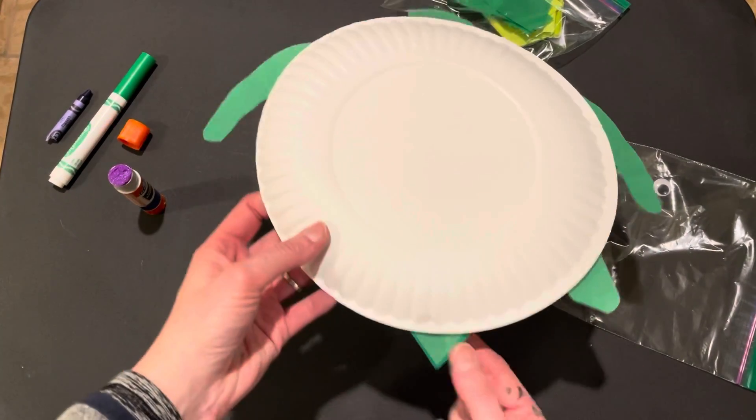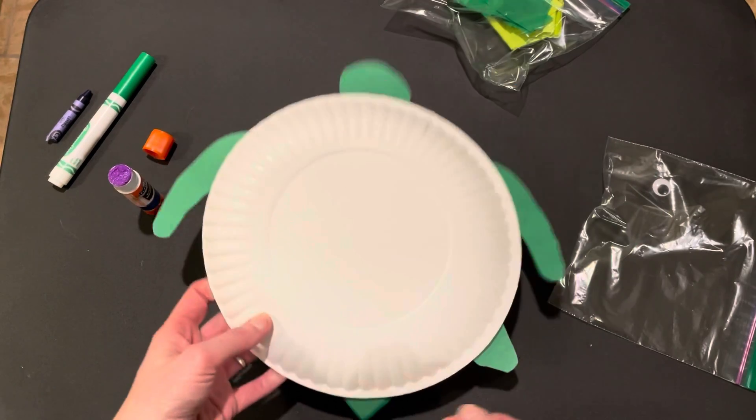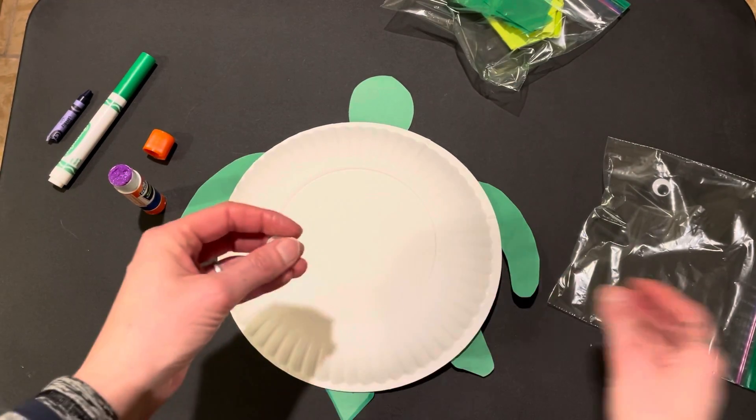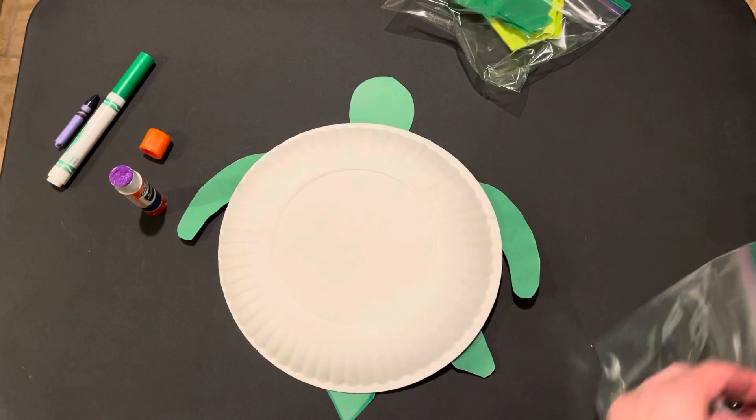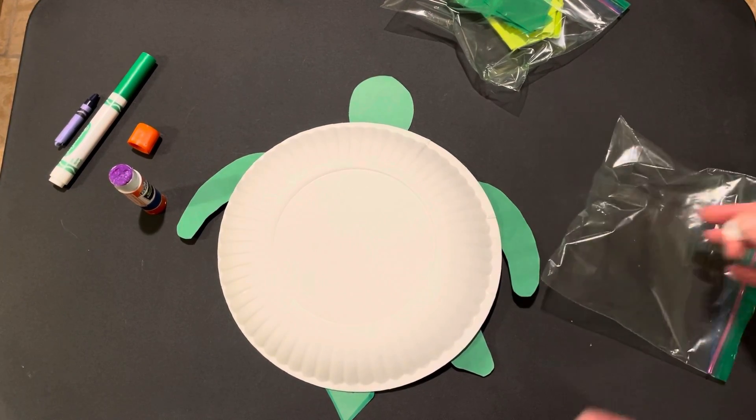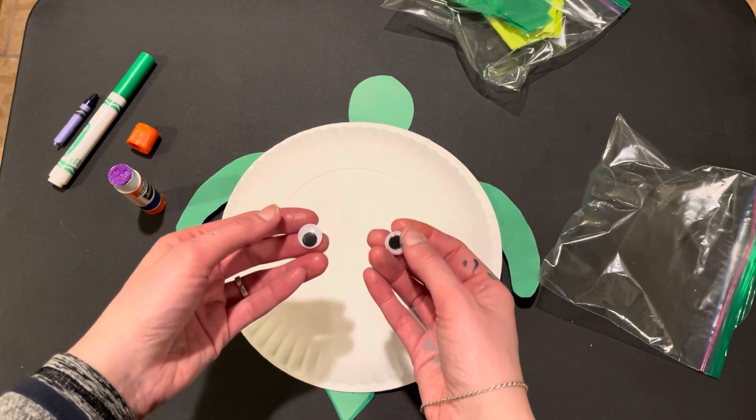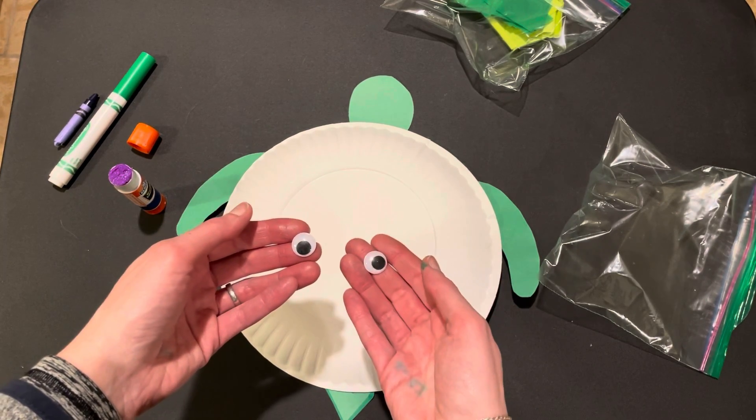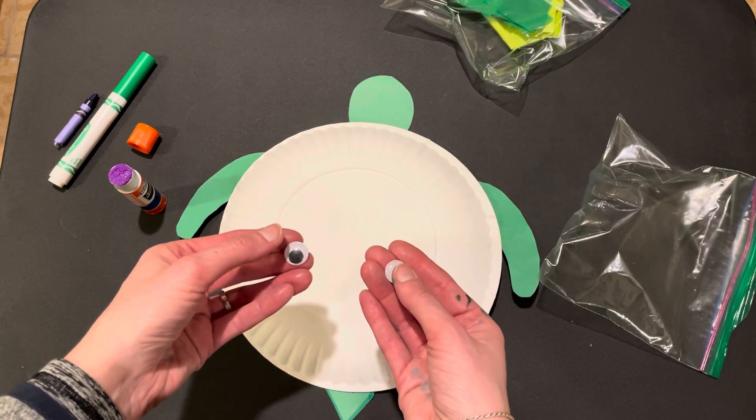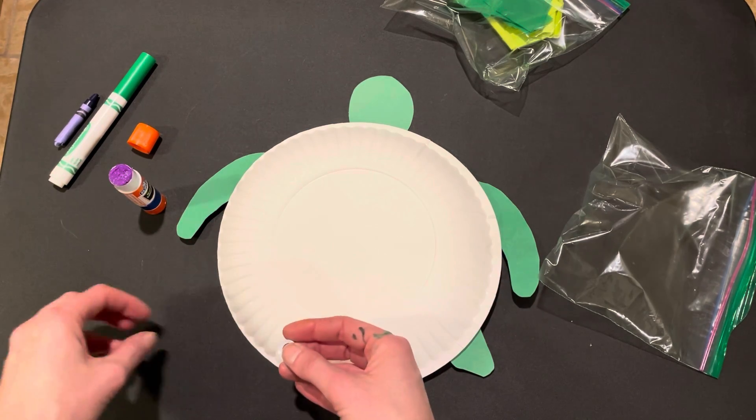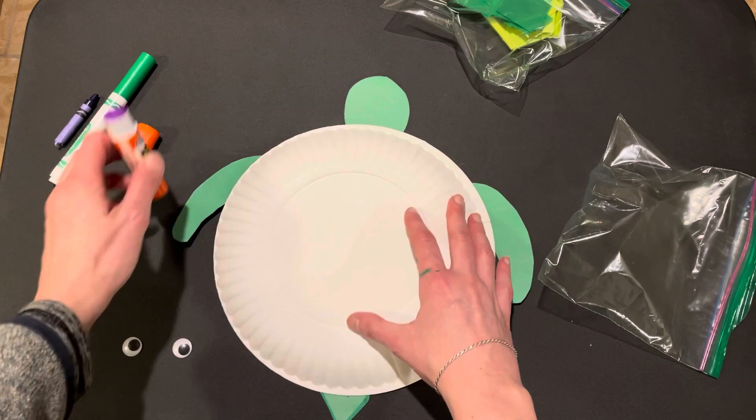So, from here, I turn the shell over and I'm going to place on the eyes. And again, it's nice for talking about facial features, more body awareness, and even counting. Same thing. Oh, how many eyes does the turtle have? One, two. How many eyes do you have? One, two. Counting.